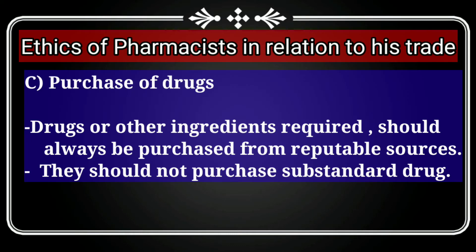The next point is purchase of drugs. Drugs or other ingredients required should always be purchased from reputable sources. A pharmacist should not purchase substandard drugs. Purchases should be made only from licensed sources that provide quality drugs. This ensures that quality drugs reach the patient. This is the ethics related to trade regarding the purchase of drugs — always buy from reputable sources and never purchase or sell substandard drugs.